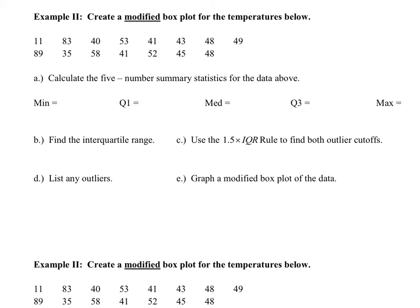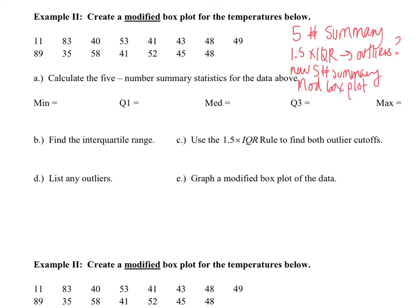In example 2, we are asking you to create a modified box plot. When you create a modified box plot, you need to first get your 5-number summary. Then you have to determine what is your 1.5 times IQR to see if there are any outliers. After you have determined if you have any outliers, you need to find your new 5-number summary with a new max and min if needed, and then we are going to graph the modified box plot. Go ahead and follow through with this example on your own, and then unpause the video and check your solutions.